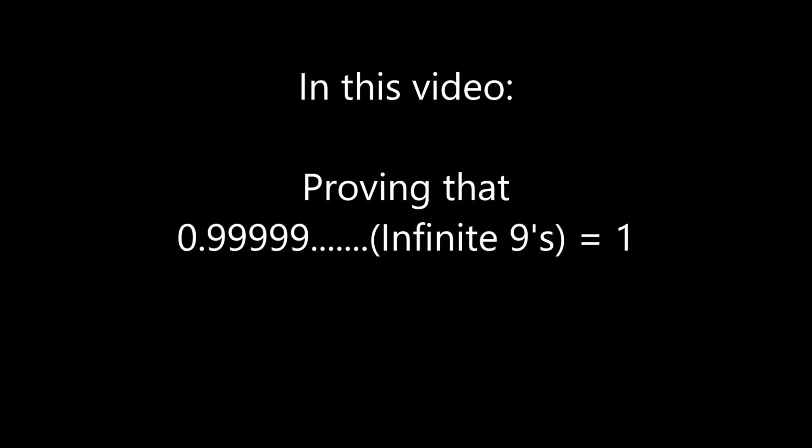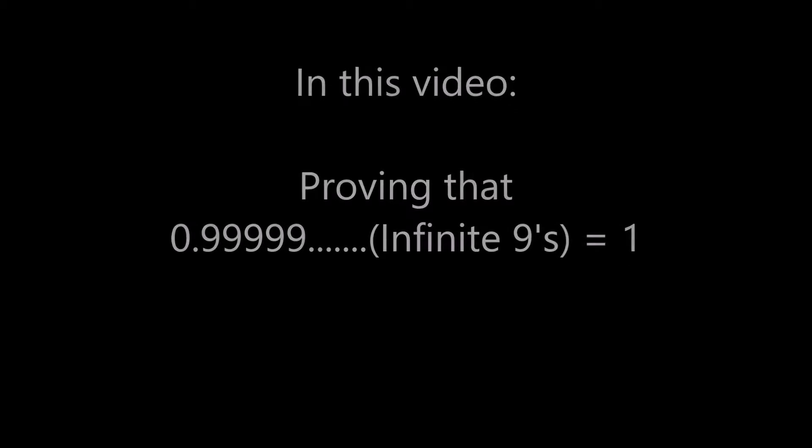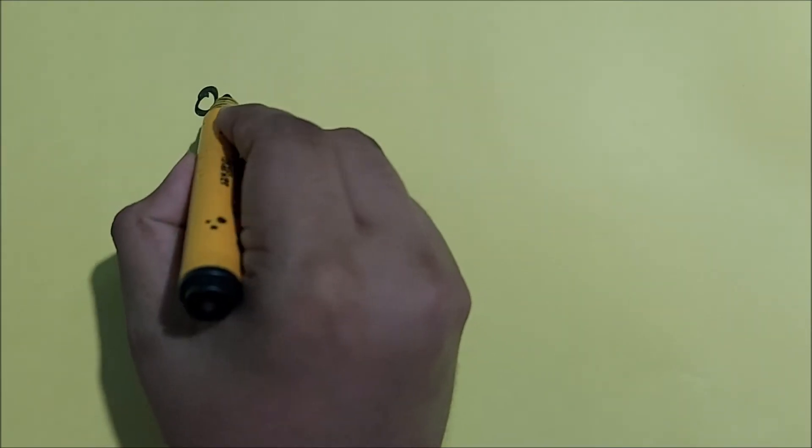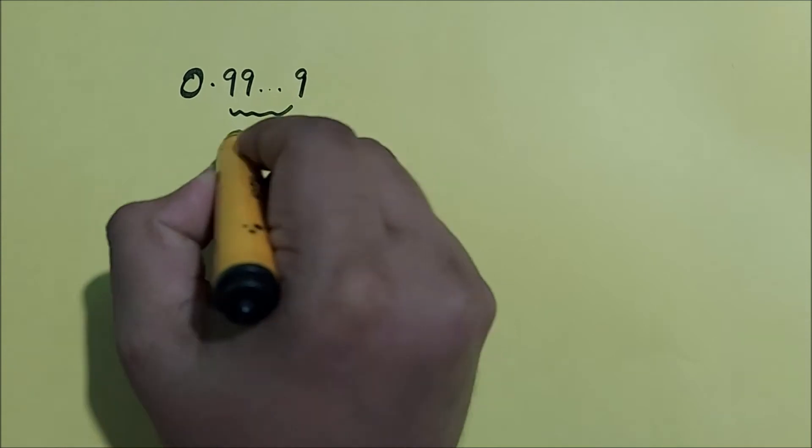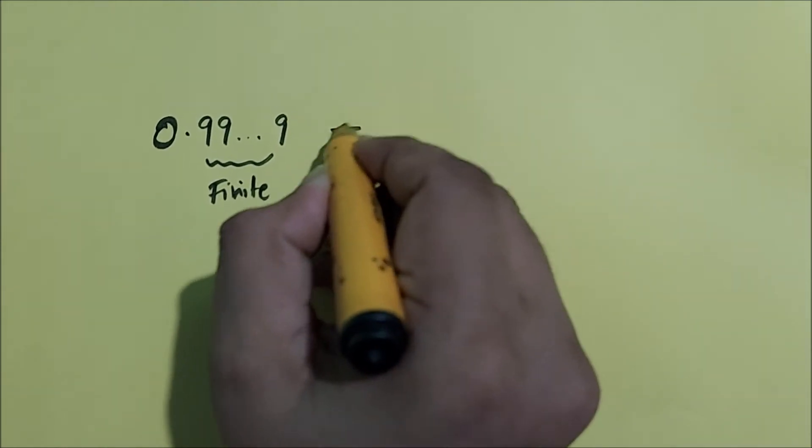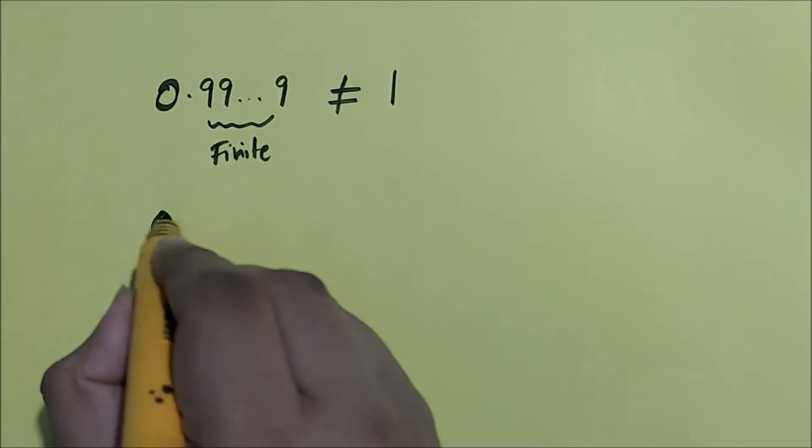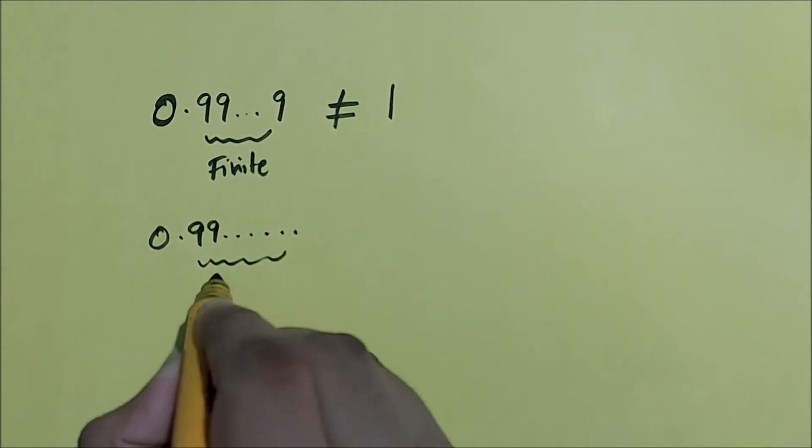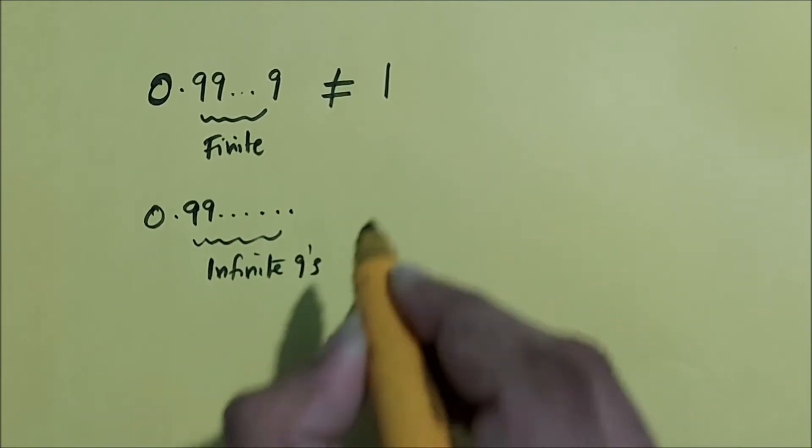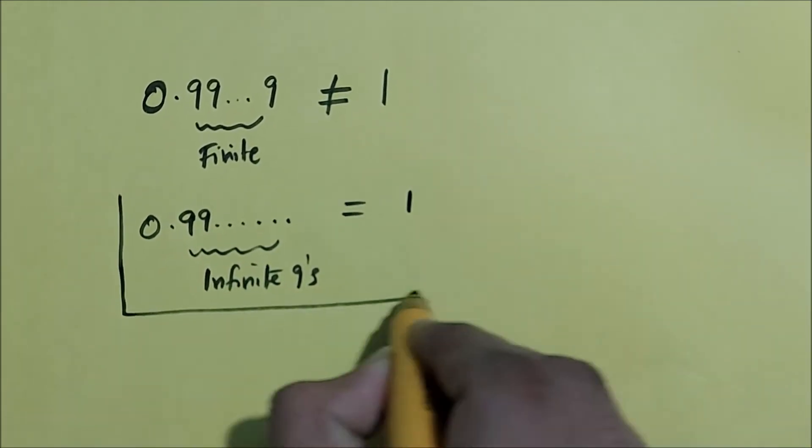So 0.9 bar means 0.999 infinite 9's. We have to first note that 0.9 with a finite number of 9's, that is not equal to 1, and we are not trying to prove that. We are trying to prove that 0.99 infinite number of 9's is the same as 1.